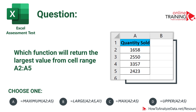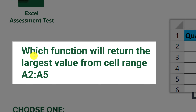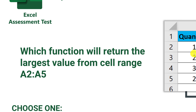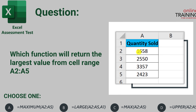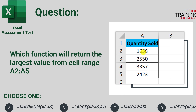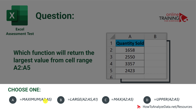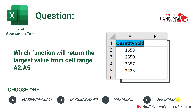Here's a question to test your knowledge of Excel formulas and functions: which function will return the largest value from cell range A2 through A5? Looking at the screenshot, A2 through A5 contain four-digit numbers. The four choices are: MAX(A2:A5), LARGE(A2:A5,A1), MAX(A2:A5), and UPPER(A2:A5). Which one do you think is correct?